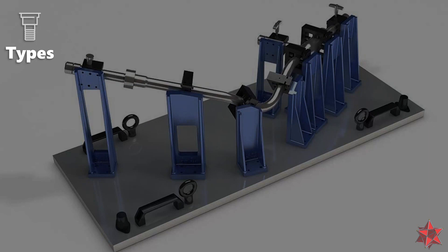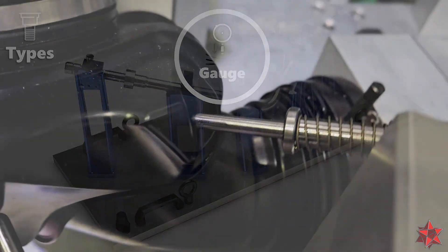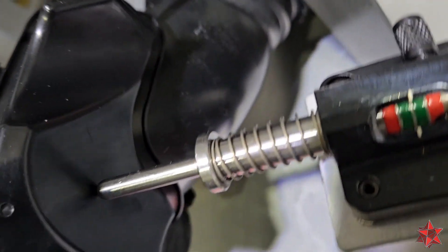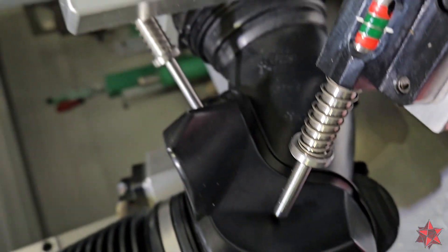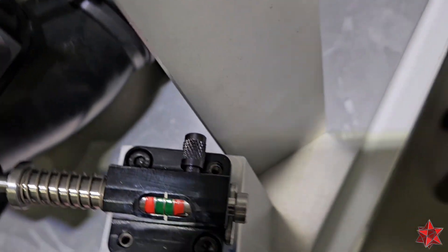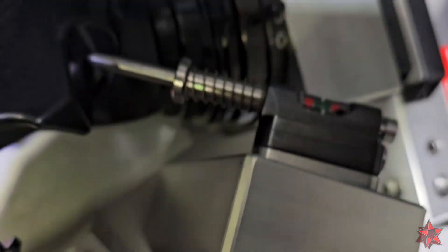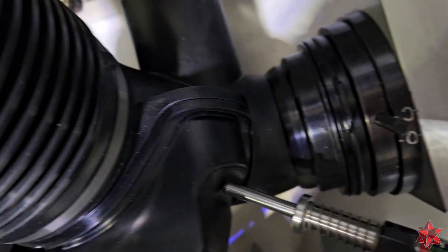And the last type of fixtures we will mention here is the gauge fixtures. These are custom fixtures crafted for component-specific gauges, providing rapid and precise measurements for particular features.